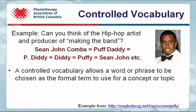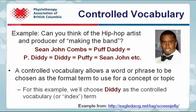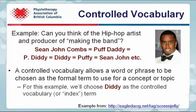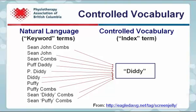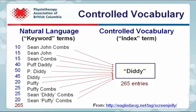A controlled vocabulary allows a word or phrase to be chosen as the formal term to use for a concept or topic. For this example, we'll choose Diddy as the controlled vocabulary or index term. Any time an article mentioned one of these names or keyword terms, the index term Diddy would be assigned to it. If the numbers to the left of the names represented how many articles use these terms, entering the keyword term Sean John Combs would only find 10. However, searching using the index term Diddy would find all 265 of them.